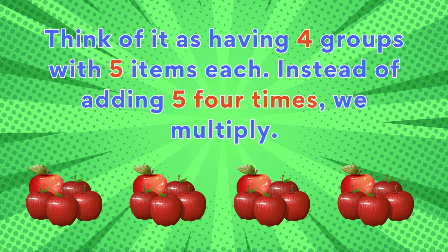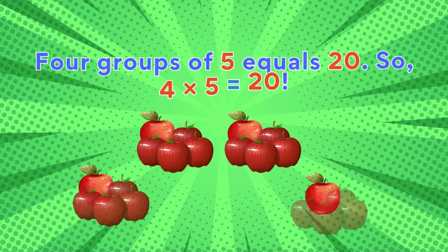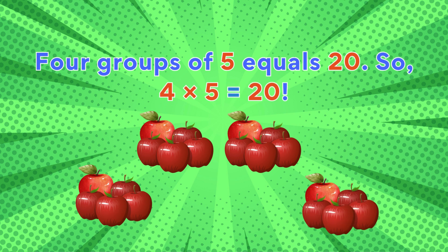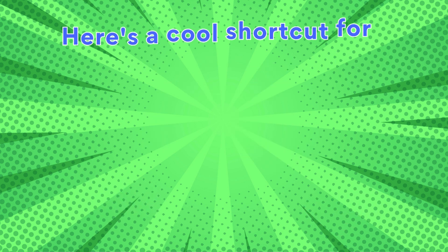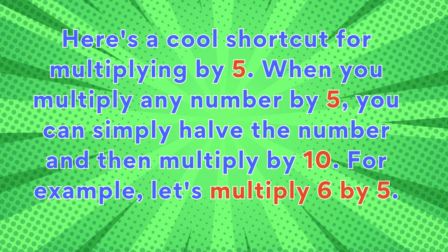Instead of adding five four times, we multiply. Four groups of five equals twenty, so four times five equals twenty. Here's a cool shortcut for multiplying by five: when you multiply any number by five,